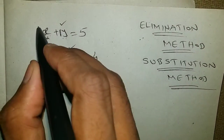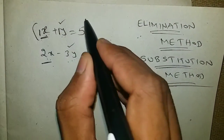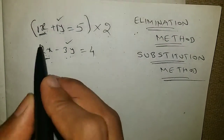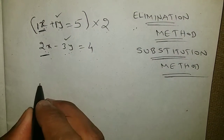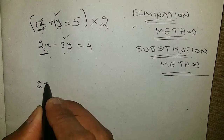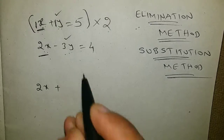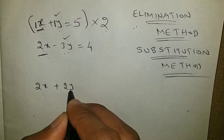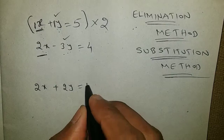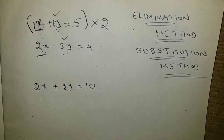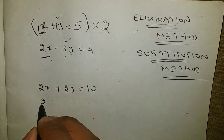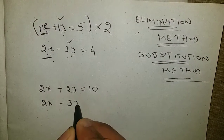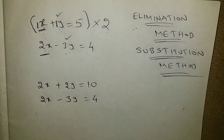So for that, I will multiply the entire first equation by 2. 1x into 2 gives 2x, plus 1y into 2 gives 2y, equals to 5 times 2 which is 10. The second equation I am writing as it is: 2x minus 3y equals to 4.